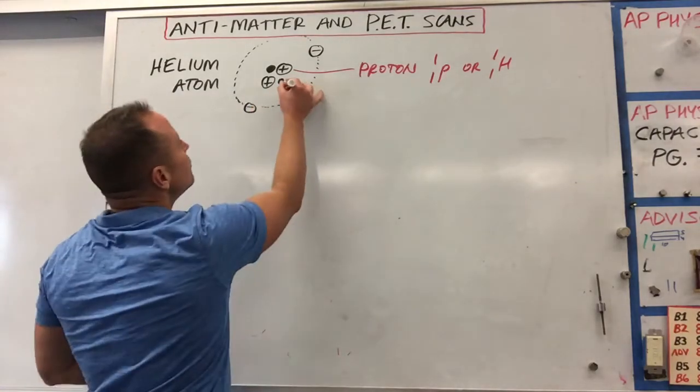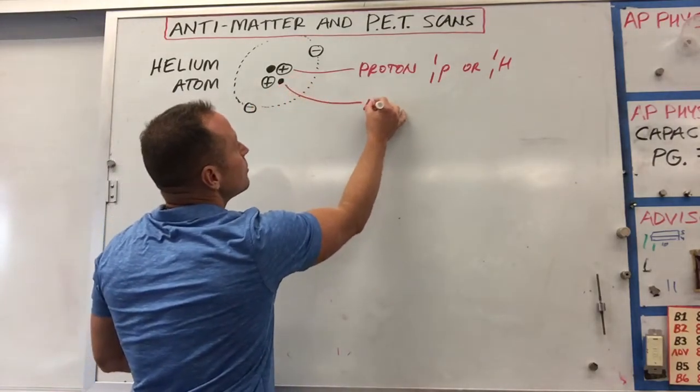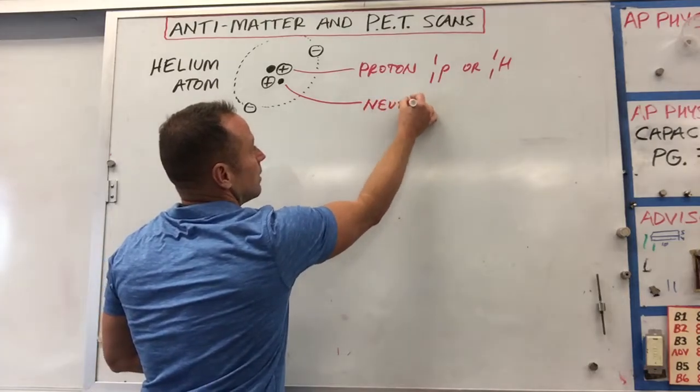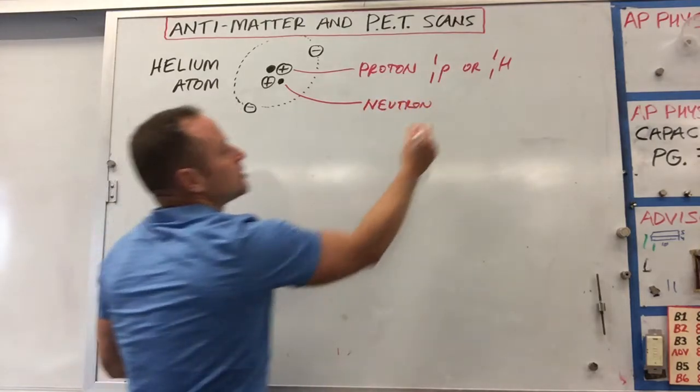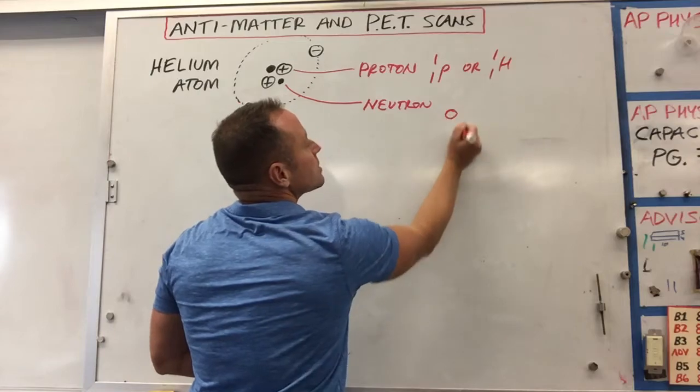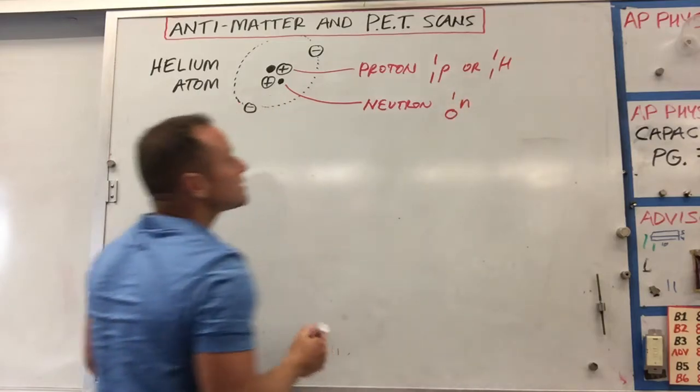These guys here are neutrons. They have no charge, so that's a neutron. They don't have any charge, so charge is zero. They have a mass number of one. We tend to write them like this.